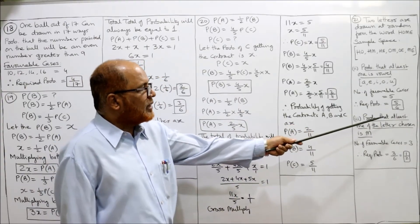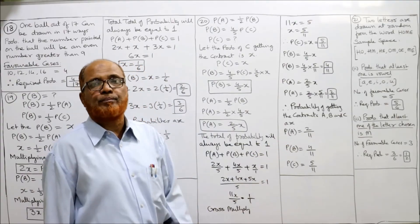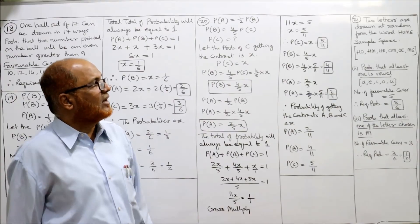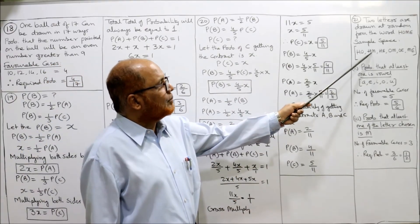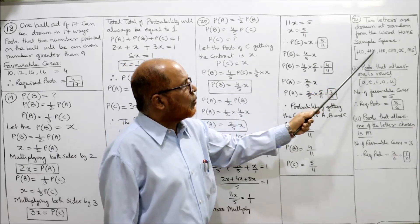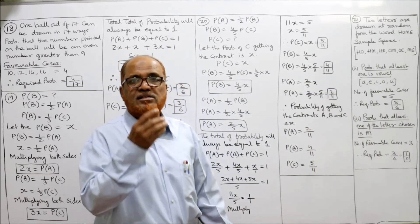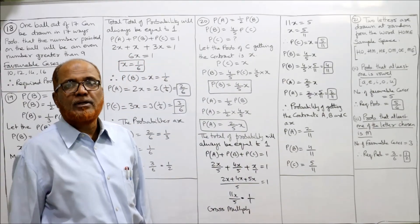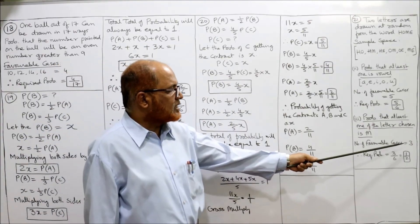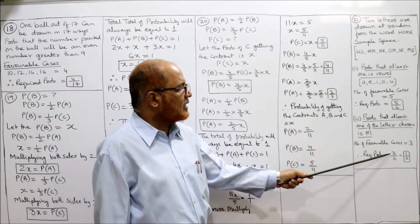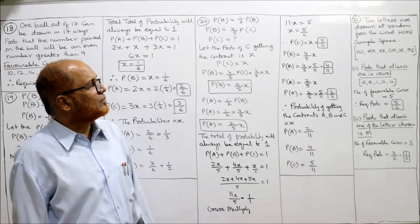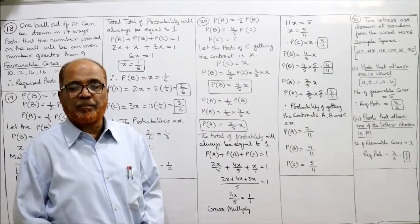Last question: probability that at least one of the letters chosen is M. How many cases have M? HM — one case. OM — one case. ME — one case. So in three cases we have the letter M. Number of favorable cases are 3 out of a total of 6. Required probability is 3 by 6 or 1 by 2. That's it. This is the complete solution of problem number 21.